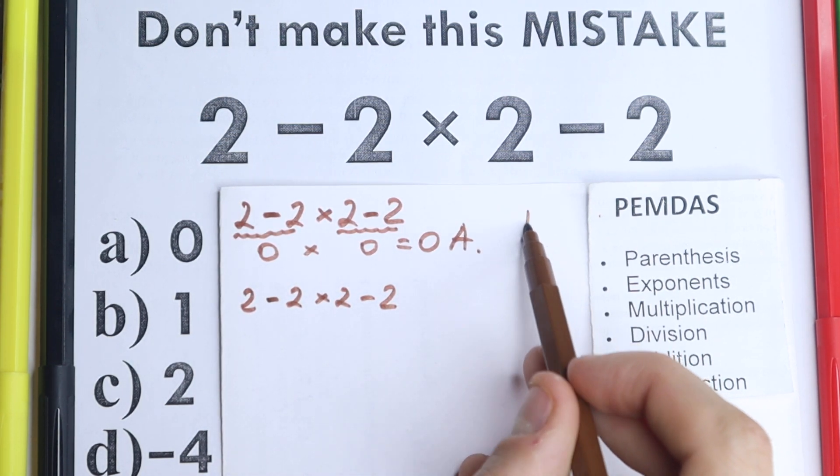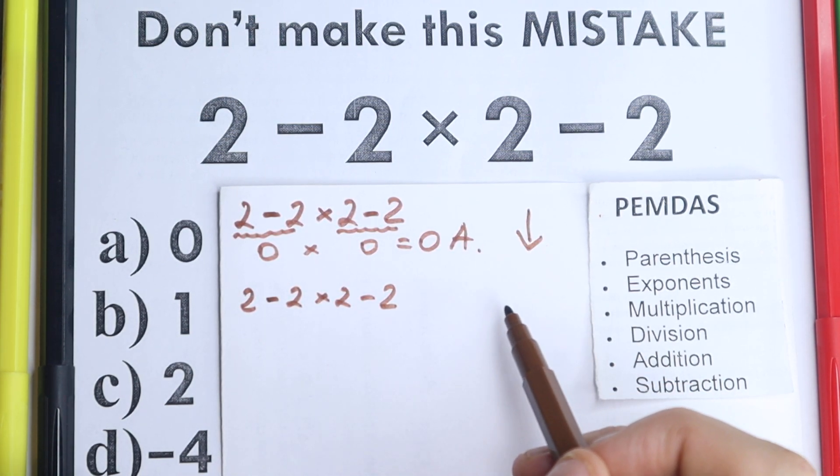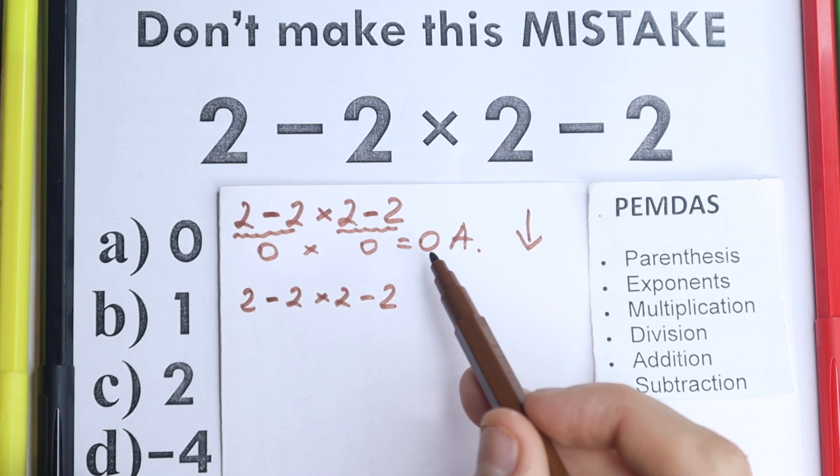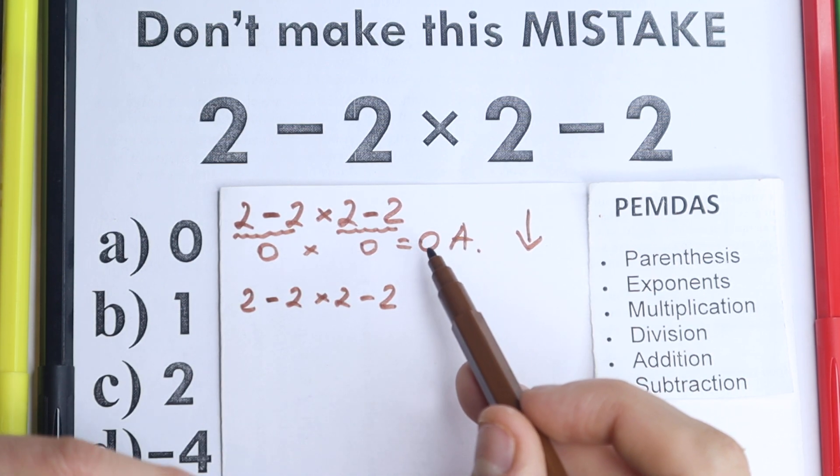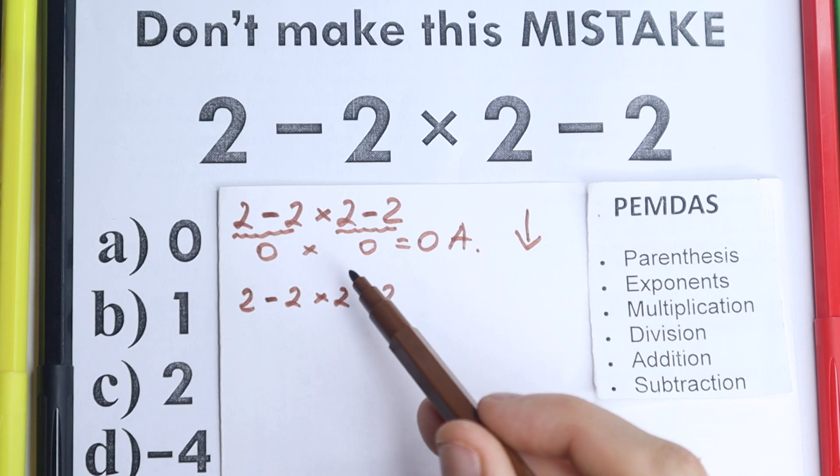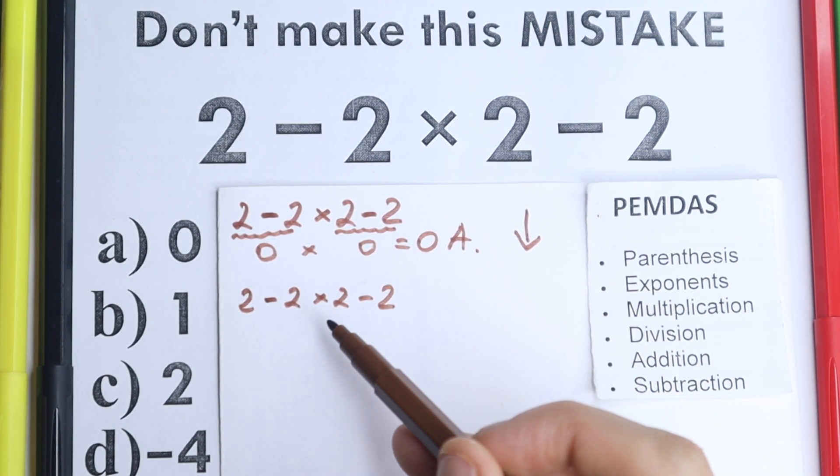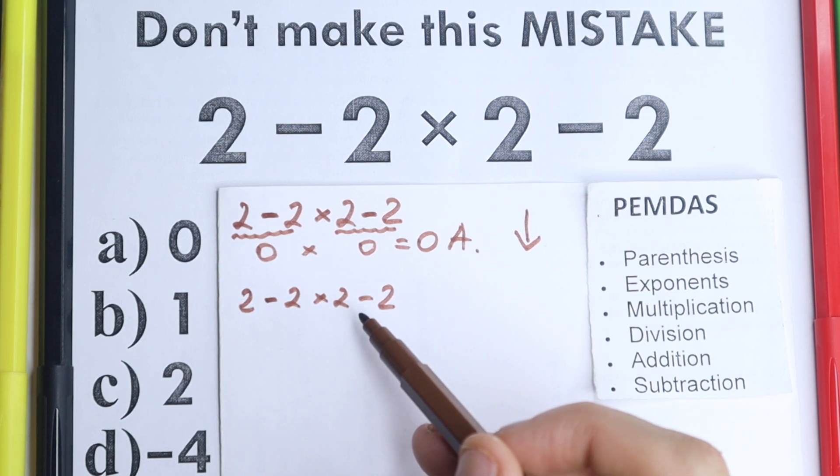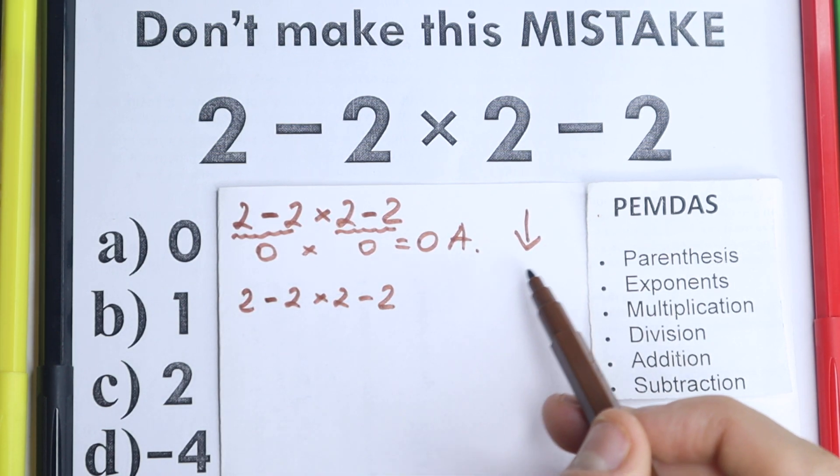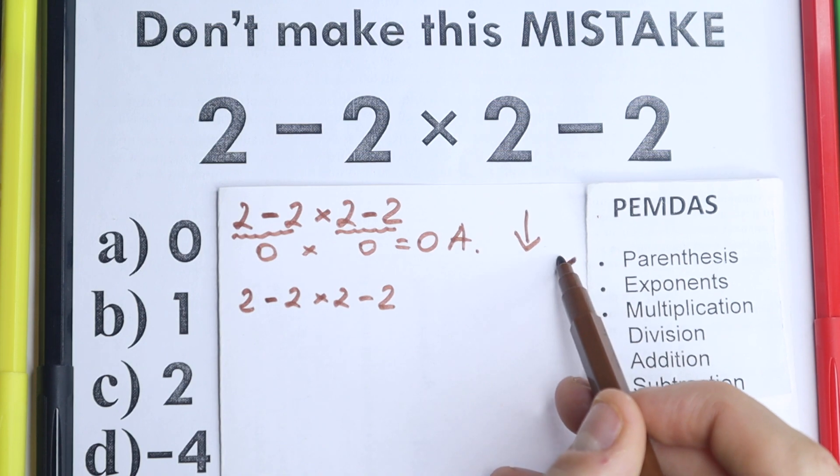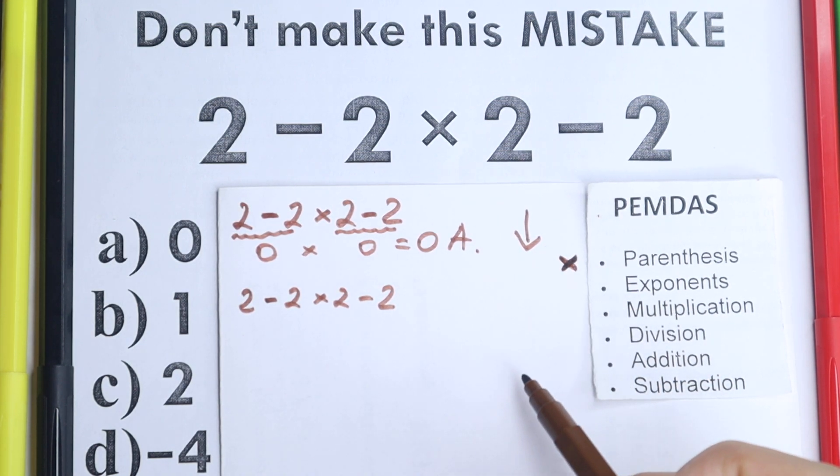Let's look at this PEMDAS. This PEMDAS works from the top to the bottom and maybe we'll have the same zero, I don't know exactly. First step, parentheses. Are there any parentheses right here? No, I don't see any of those, we don't have any parentheses, so we just reject this step.